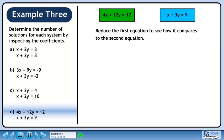Reduce the first equation to see how it compares to the second equation. Divide each side by 4 to get x plus 3y equals 3. Comparing this to the second equation, we have the same coefficients but the constant is different. These are parallel lines.